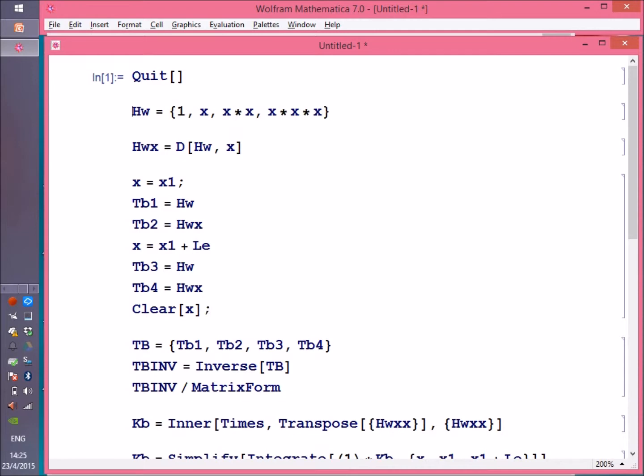First, I wrote down the H vector as a row vector: 1, x, x squared, x cubed. Actually, I use x times x and x times x times x instead of x squared and x cubed, as old habits die hard.